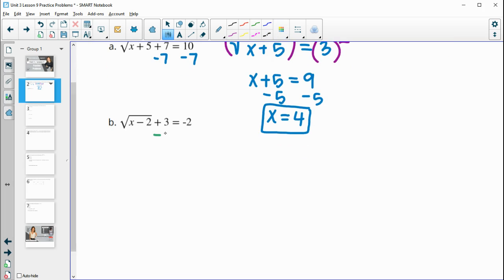So for part b, we'll subtract 3 from both sides to isolate the radical. We'll get the square root of x minus 2 equals negative 5. This is not possible because we can't have our roots equal to a negative number. So there's no solution here.